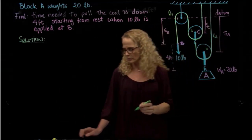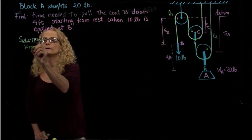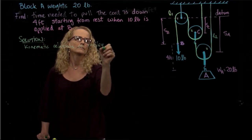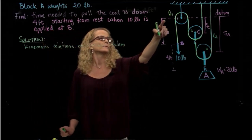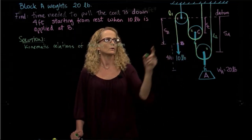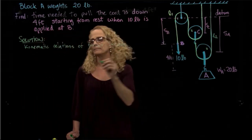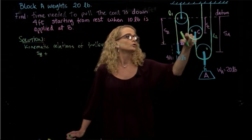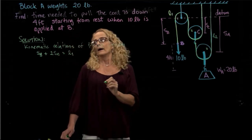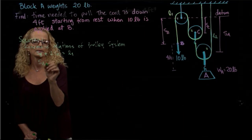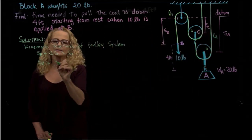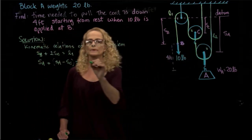I'll call this L2. So I'm going to find the kinematic relations of the pulley system. I see that to relate those distances, I relate S_A, S_B, and S_C with L1, which is the total length of that cord. I have S_B plus two S_C equals L1. And then I have S_A plus the distance (S_A minus S_C), which gives S_A plus S_A minus S_C equals L2.